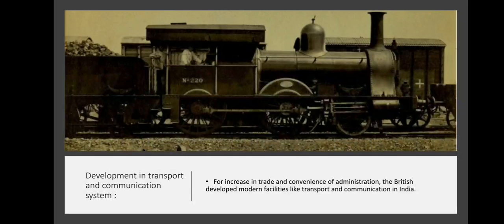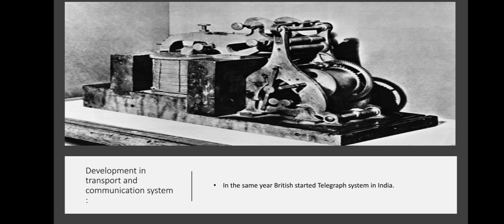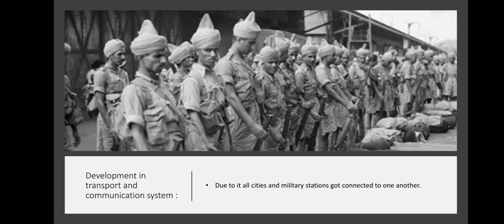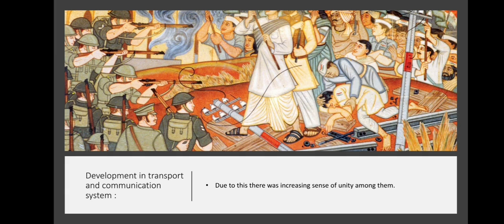For increase in trade and convenience of administration, the British developed modern facilities like transport and communication in India. In 1853, the first railway ran on the route of Mumbai to Thane. In the same year, the British started the telegraph system in India. Due to this, all cities and military stations got connected to one another, which had a long-term impact on the social life of Indians and increased a sense of unity among them.